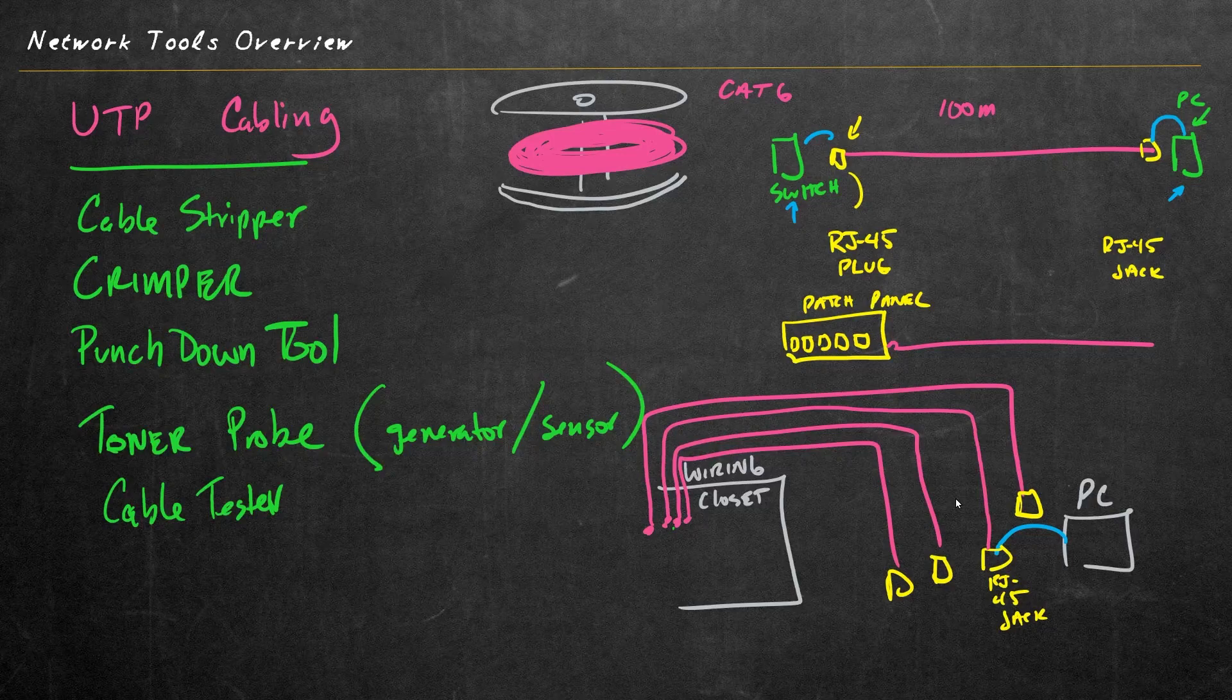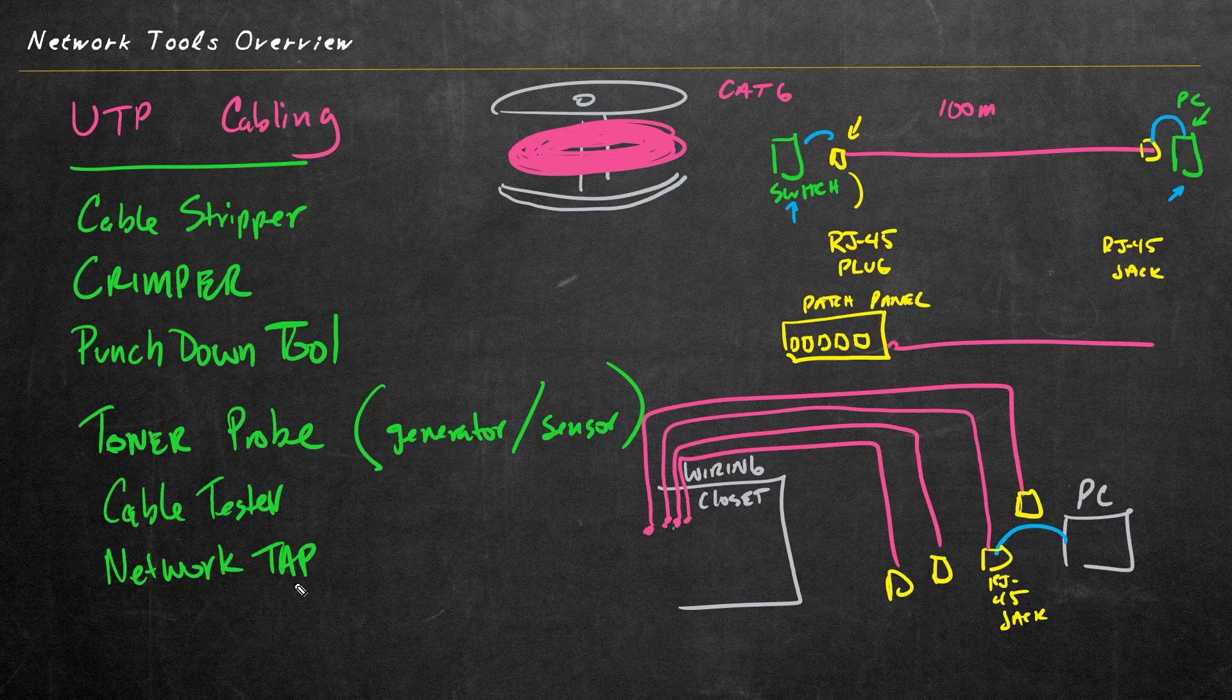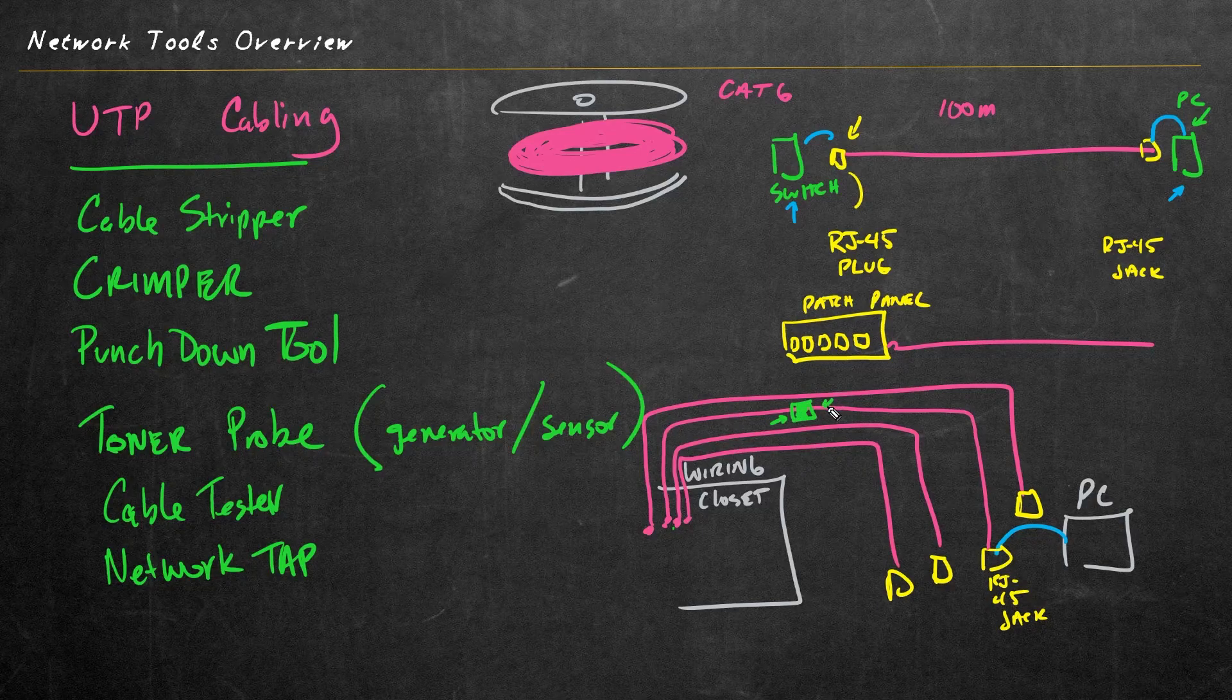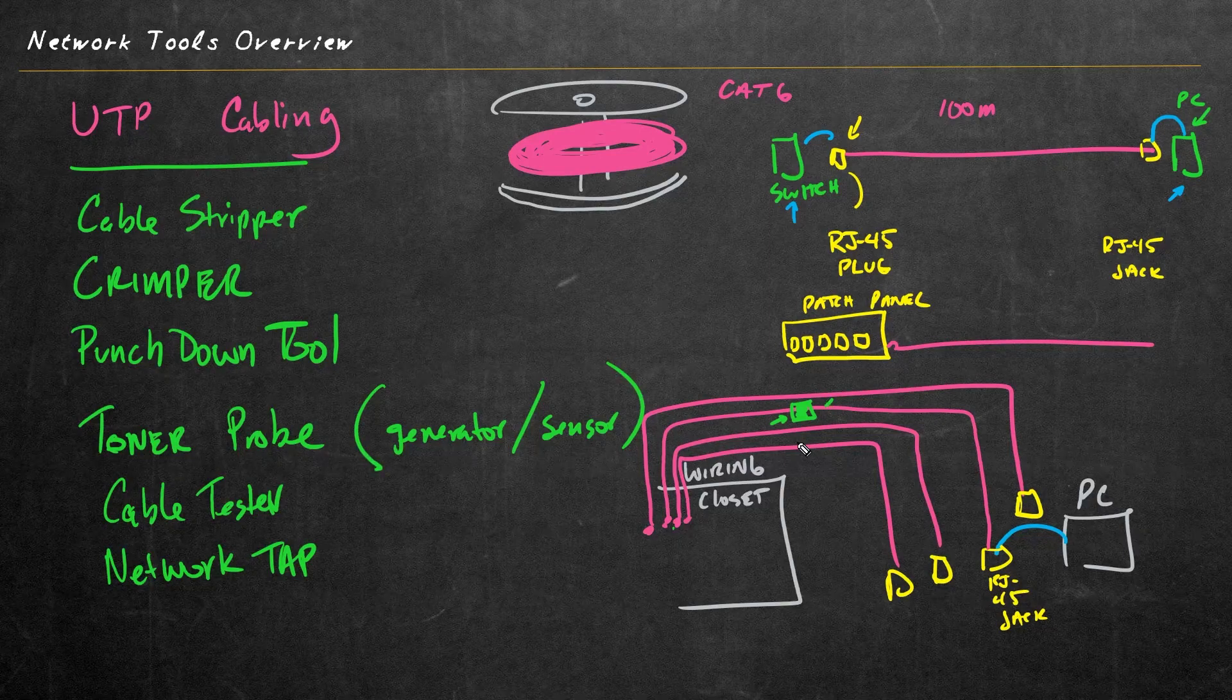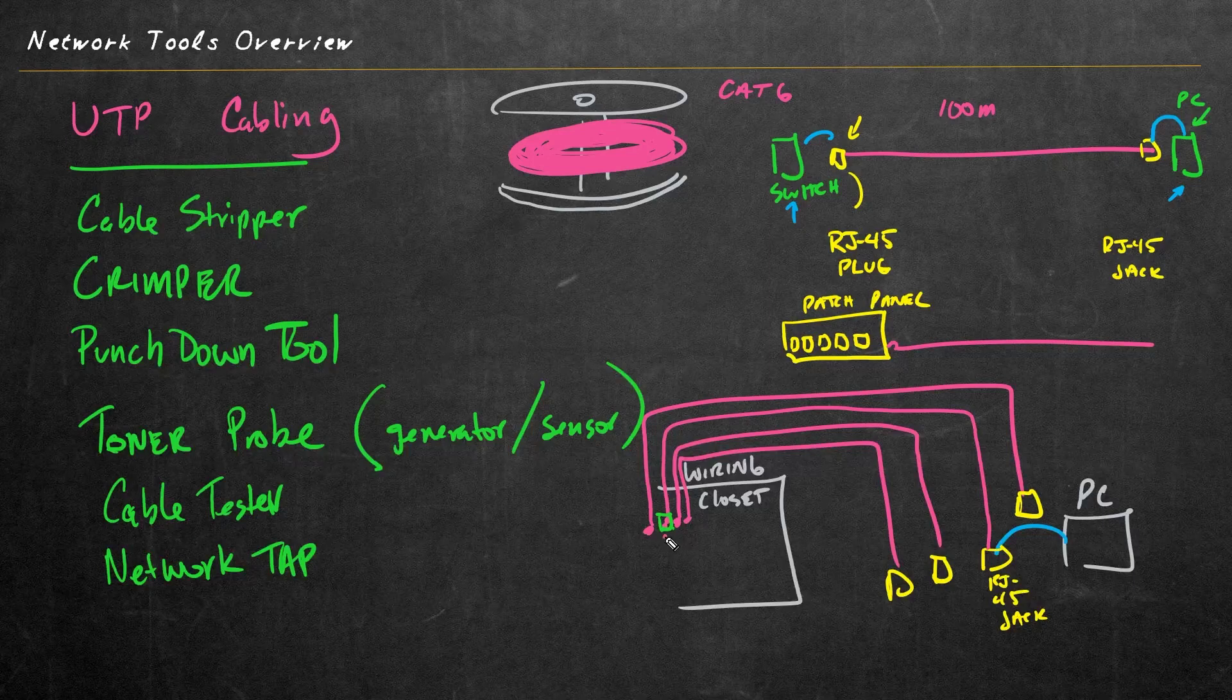Another tool that can come in very, very handy is a network tap. And when you think of a network tap, think of an eavesdropper, somebody who's listening in on your conversation. So if this computer here was having a problem, if we implemented a network tap right in the middle, so we basically connect one end of the cable here and one end of the cable here. Or more likely, let me go ahead and remove that, we simply unplug the cable here, we put the network tap, and then we plug the other end of the cable wherever the first one was originally going.